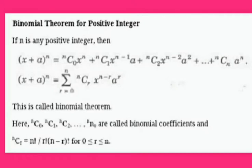It can be put in the abbreviated form as follows: x plus a power n is equal to sigma r equals 0 to n, ncr into x power n minus r into a power r. This term ncr into x power n minus r into a power r is called the general term of the binomial theorem.